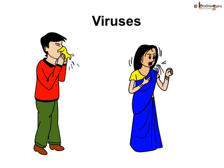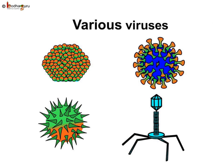Viruses are smaller than bacteria. They are of various shapes. They live and reproduce on the body of other organisms. Apart from common cold and chicken pox, viruses cause other diseases also, like mumps, influenza, measles, etc. So you can see how harmful these viruses are.